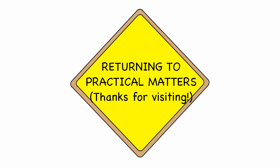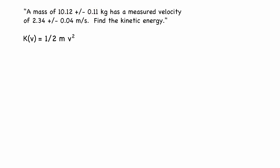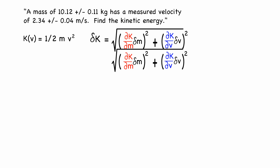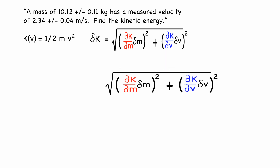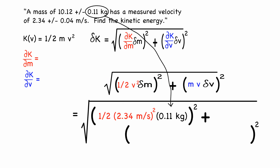Let's revisit the kinetic energy example again, but this time with two variables. K equals one-half mv squared. Only this time, both m and v are measurements with uncertainties. The uncertainty in K is the two sources of uncertainty added in quadrature, and each one involves a derivative of K with respect to a different variable. Now let's plug in all our numbers.